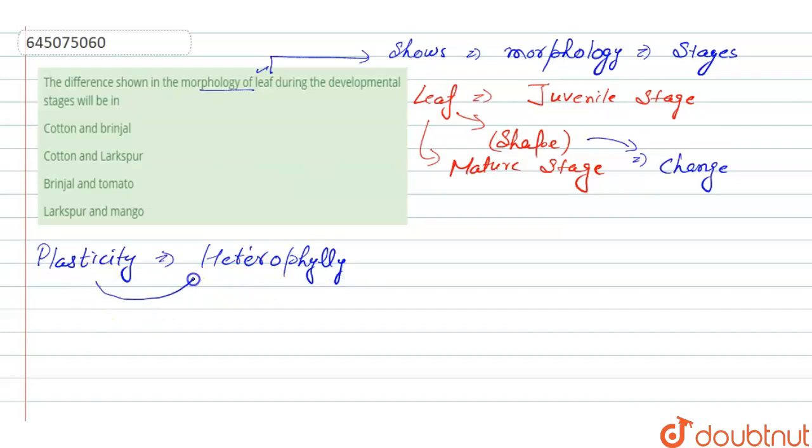Heterophylly is one of the methods of plasticity in which several pathways are followed by the leaf in response to the external environment.